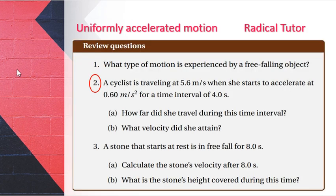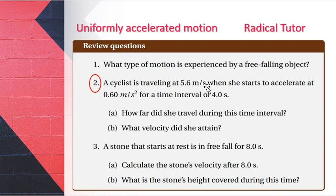Question number two: A cyclist is traveling at 5.6 meters per second. She starts to accelerate at 0.60 meters per second squared for a time interval of four seconds. The acceleration is 0.60 meters per second squared.